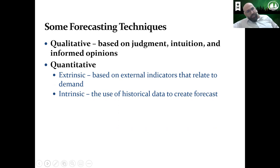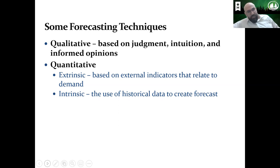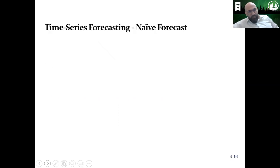Forecasting can be intrinsic or extrinsic. Extrinsic is based on external indicators related to demand. For example, if a competitor filed for bankruptcy, you'd expect more demand — that's an external factor. If a school opened next to your restaurant, that may increase demand. If a business or office opens next to yours, that means more demand. Intrinsic is based on historical data, based on what you currently have.